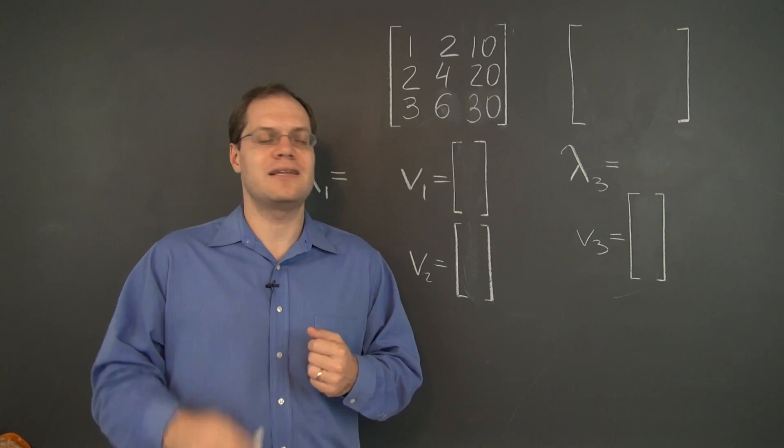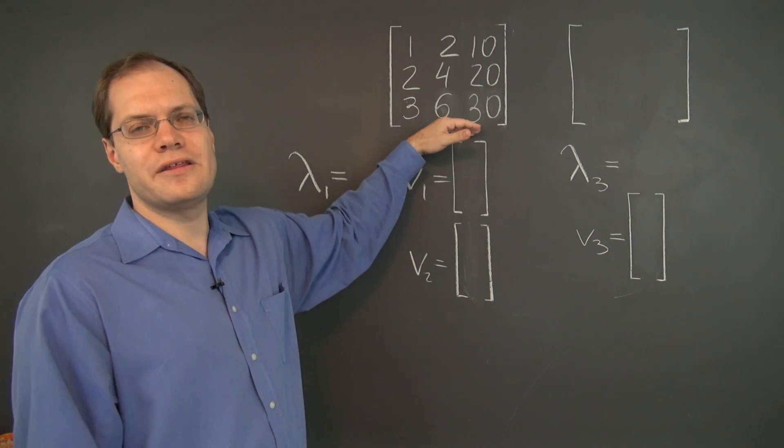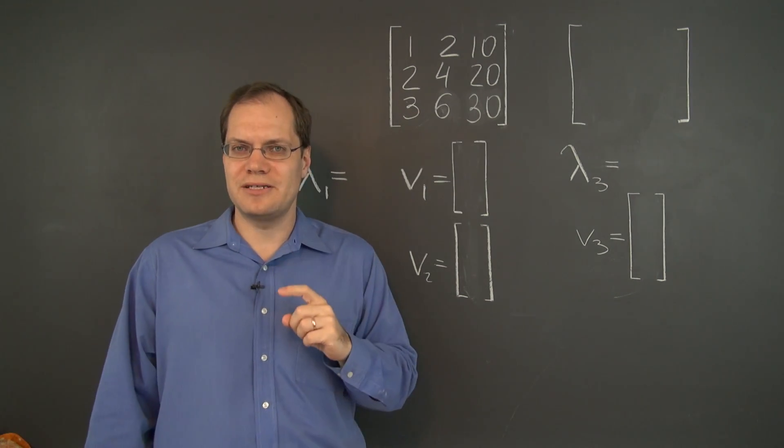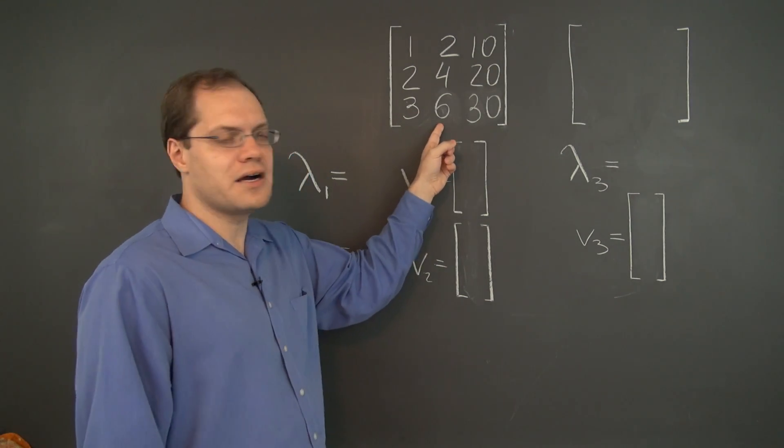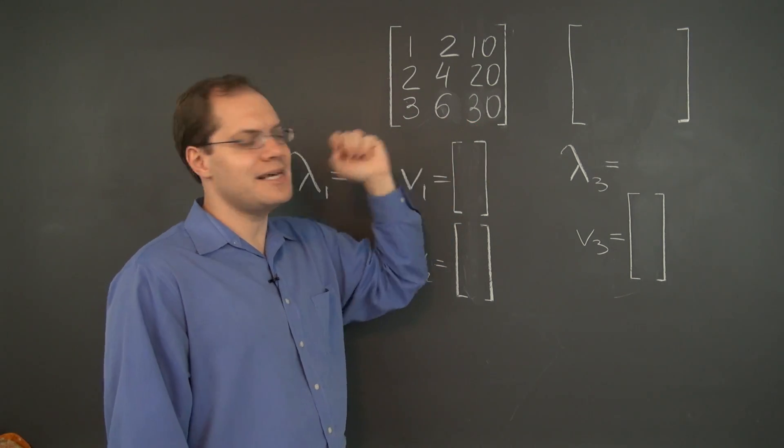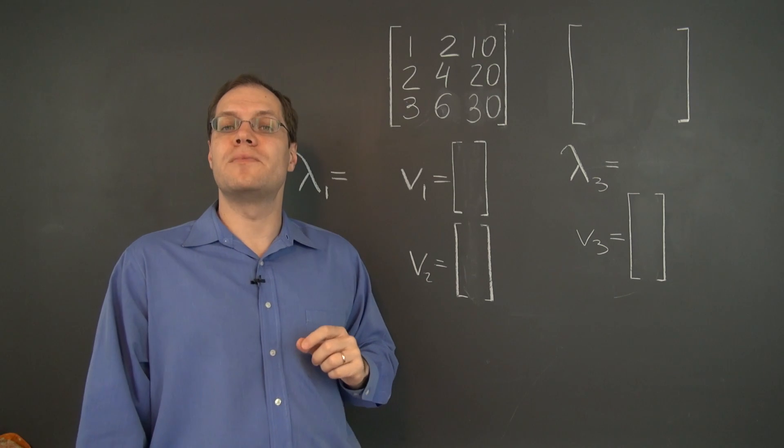So let's use that knowledge to identify all the eigenvalues of this matrix. And of course, its null space is two-dimensional, because the second column is twice the first and the third column is ten times the first.